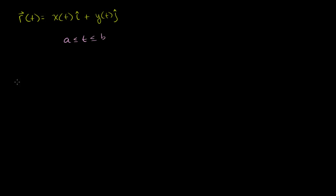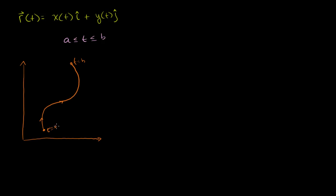This curve will look something like this. This is when t is equal to a, going in this direction, and t is equal to b up here. So this right here would be x of a, and this right here is y of a. Similarly, this is x of b, and this over here is y of b. We saw in the last video that the endpoints of these position vectors are what describe this curve — so r of a describes that point right there.